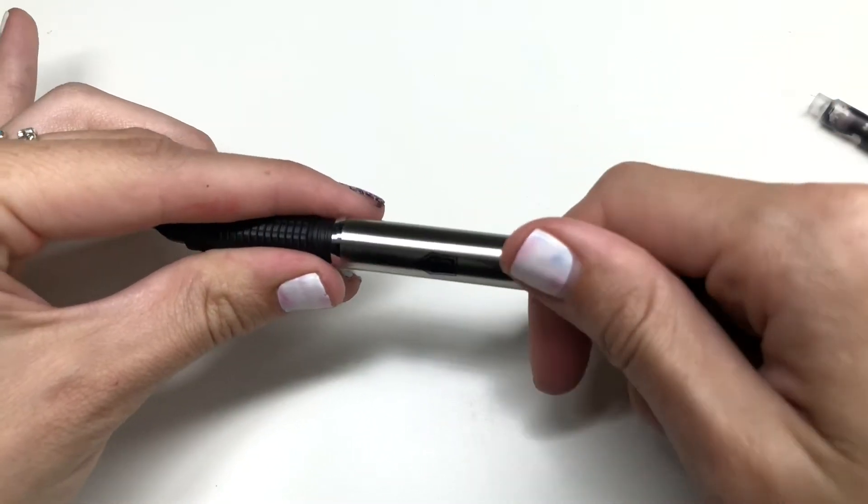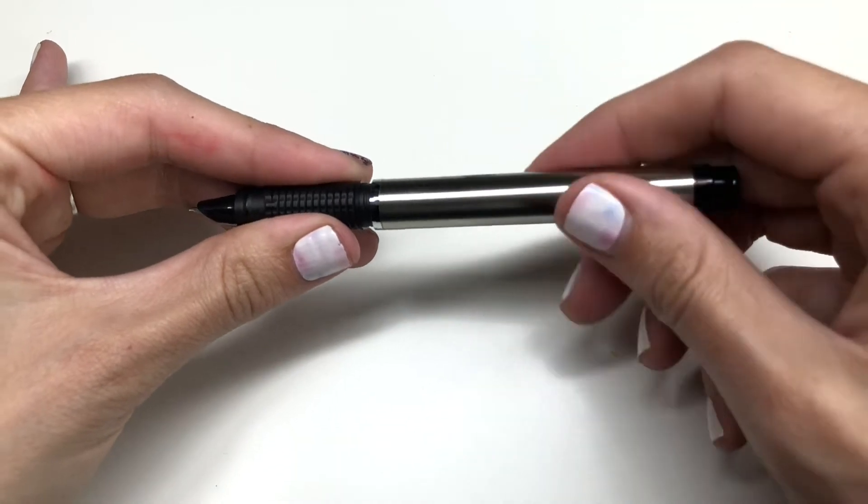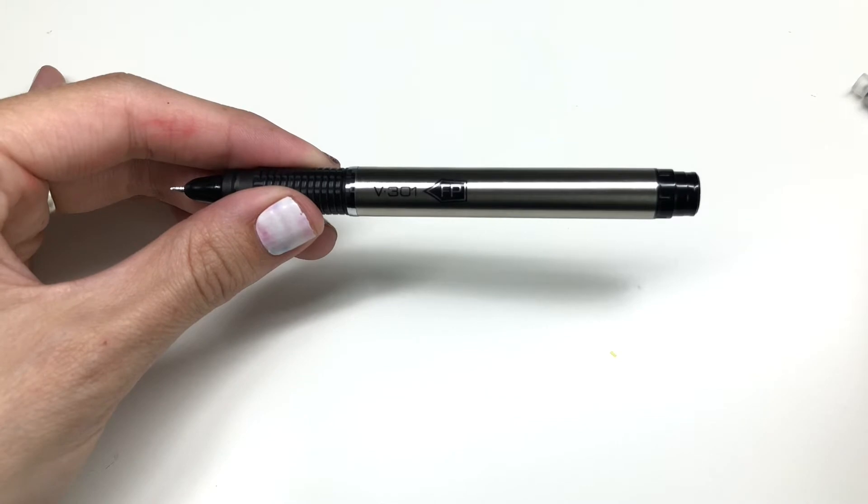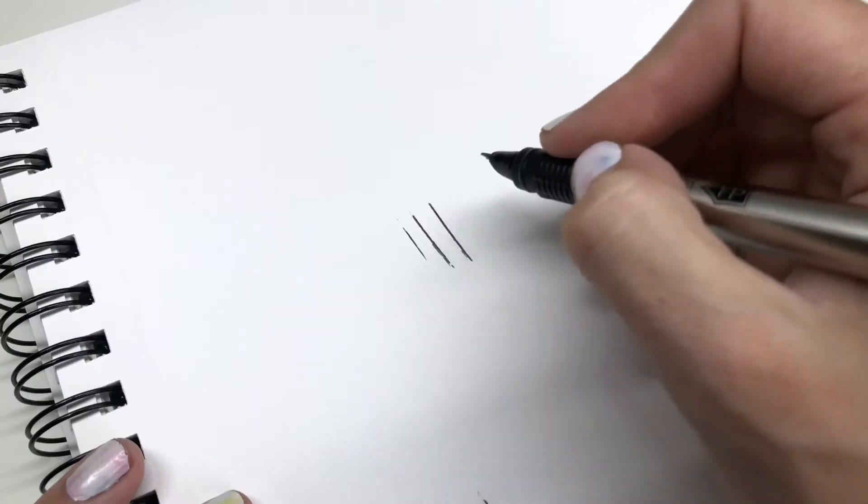Twist the barrel back on and voila! Your pen is ready to go. Make sure you do some scribble tests to get the ink flowing, and you're ready to write or draw, whatever your heart desires.